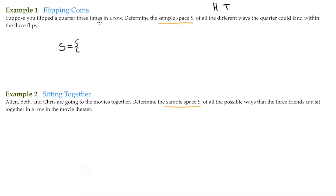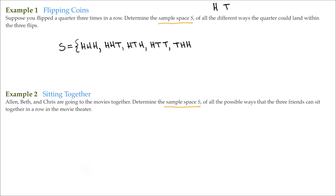So if I flip the quarter three times, it is possible to get three heads in a row — I'll label it with three H's. It is possible to get two heads and then a tail. Or we can get a head, a tail, and then a head. We can get a head and two tails. All I'm doing is listing all the possible ways, which are known as outcomes, of when I flip a quarter three times. So I can get a tail and then two heads, or a tail, a head, and then a tail.